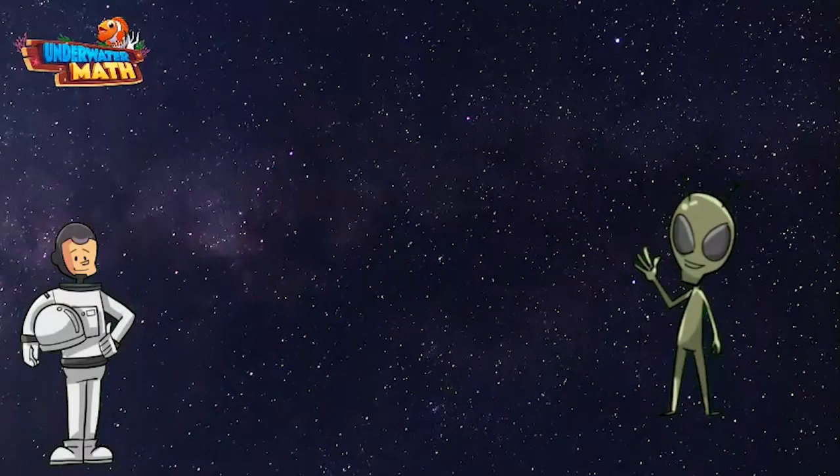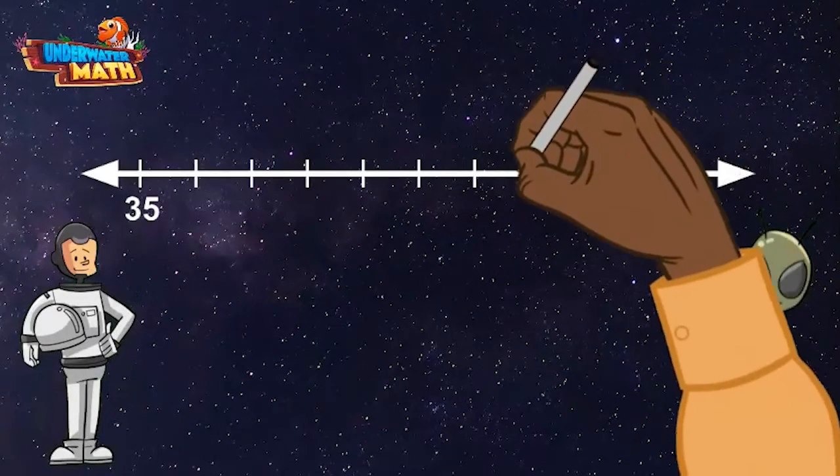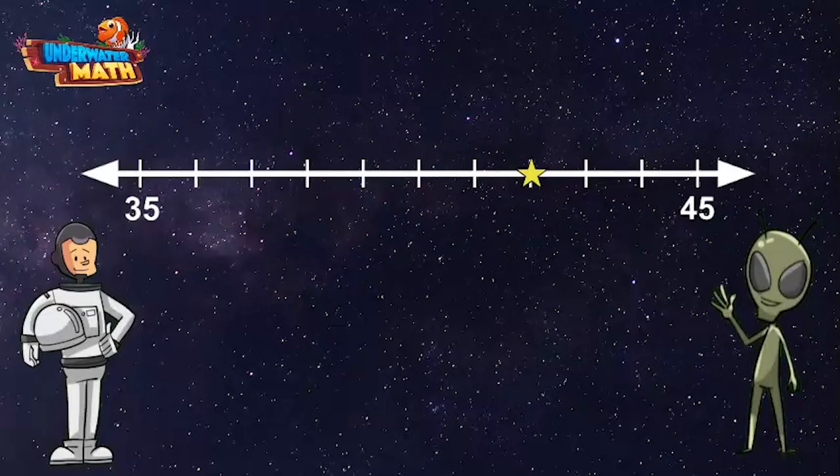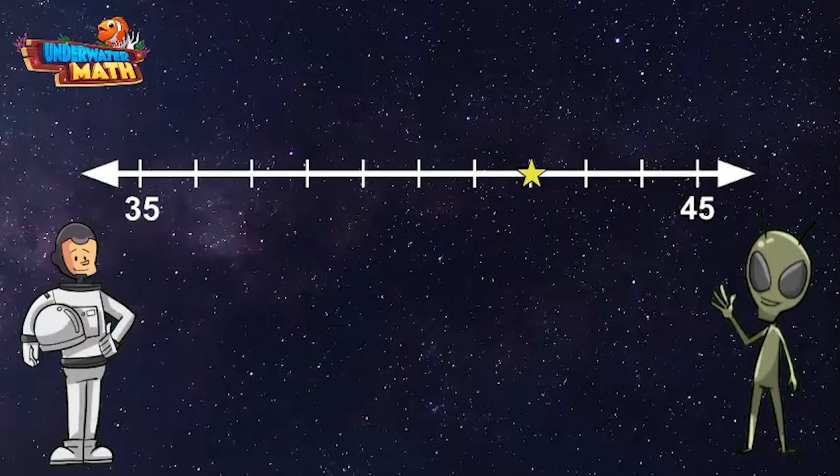starts at 35 and ends at 45? Perfect, thank you. Now I'm going to put a star right here. We need to determine what number the star represents. We know the number line starts at 35. Each tick mark between